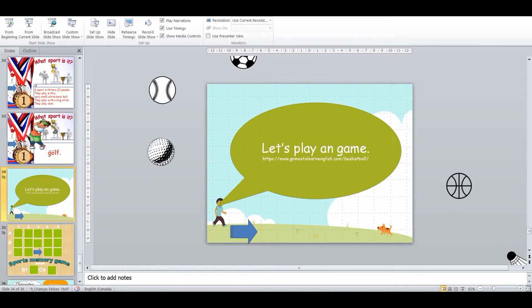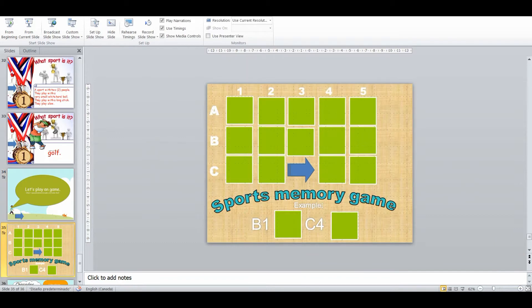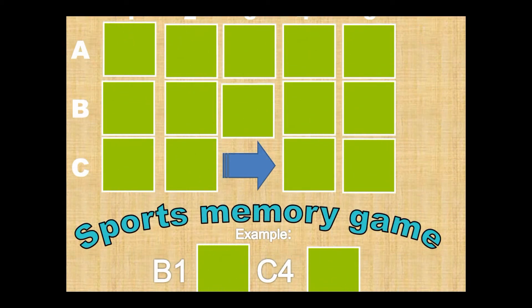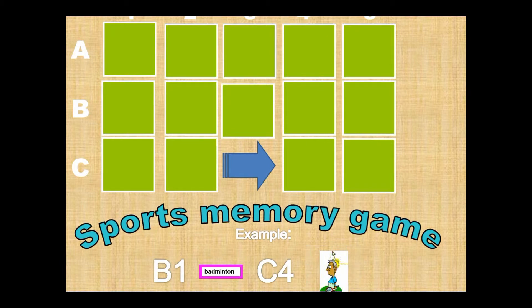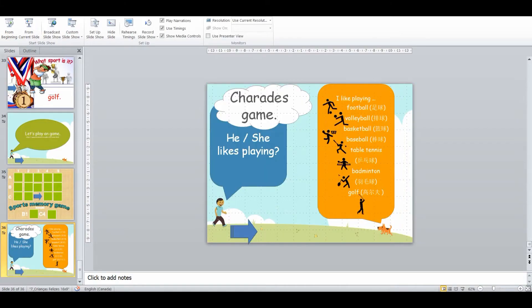Towards the end of the lesson I have a couple of different choices. There's an interactive whiteboard game on a link — that's great. There's also a sports memory game where they give you grid coordinates and have to match the word to the picture of the correct sport. Or you can do charades — have the students come up, act out the different sports, and the other students have to call out what she or he is playing or likes playing.